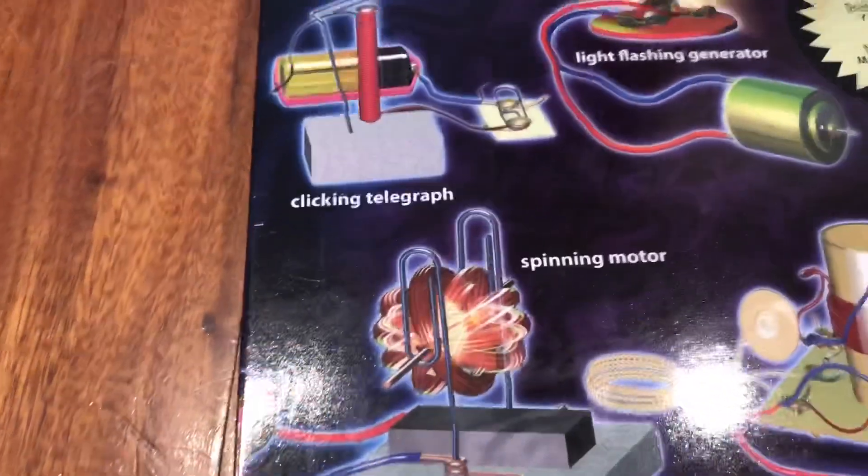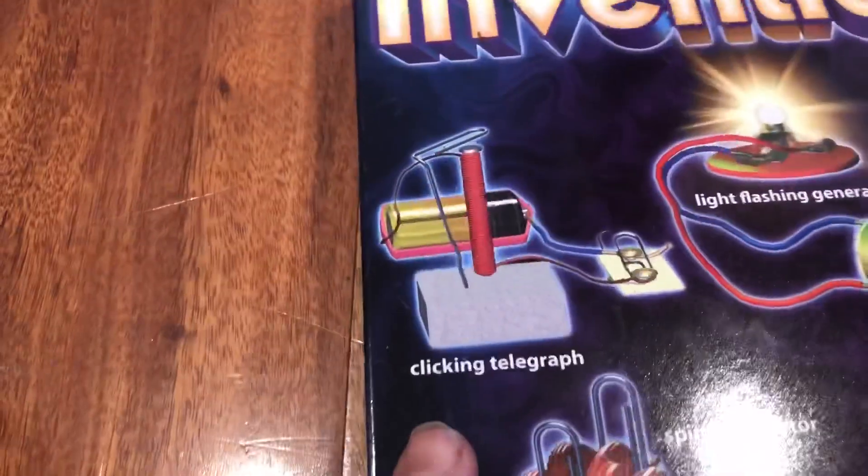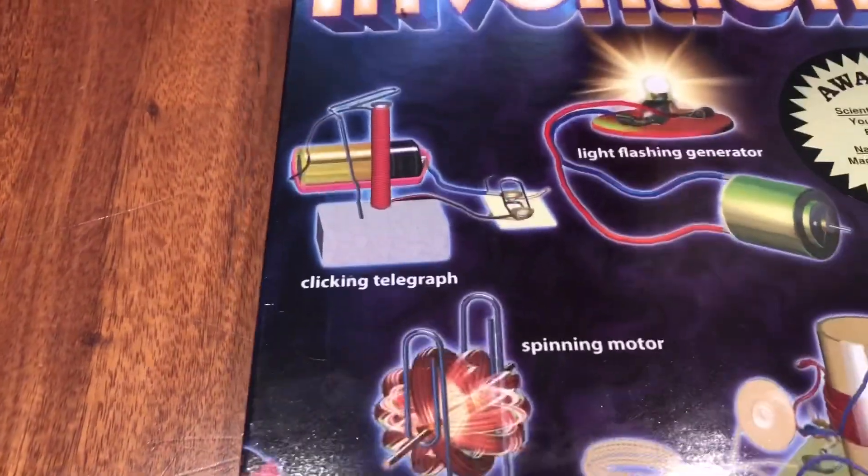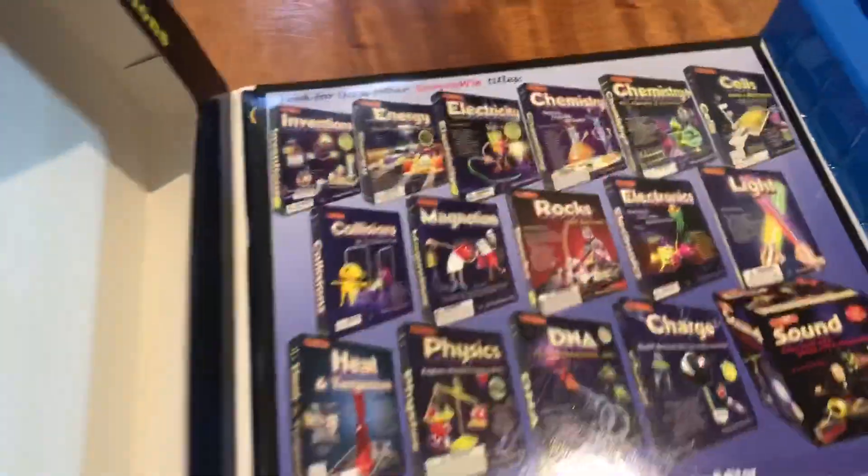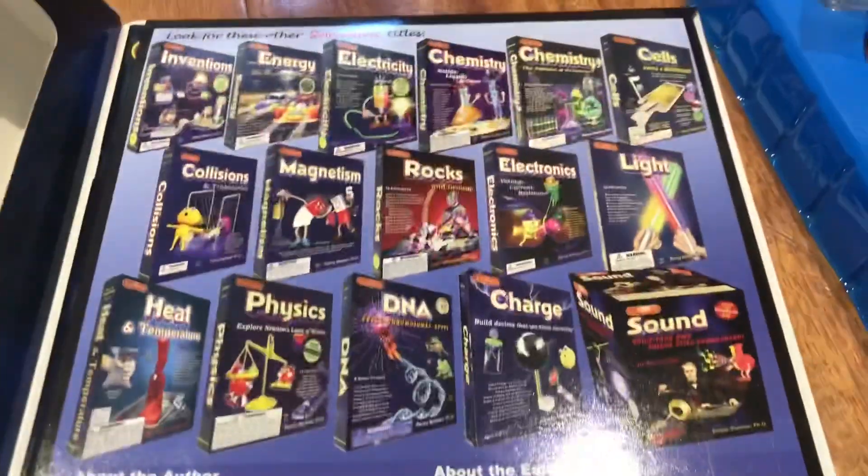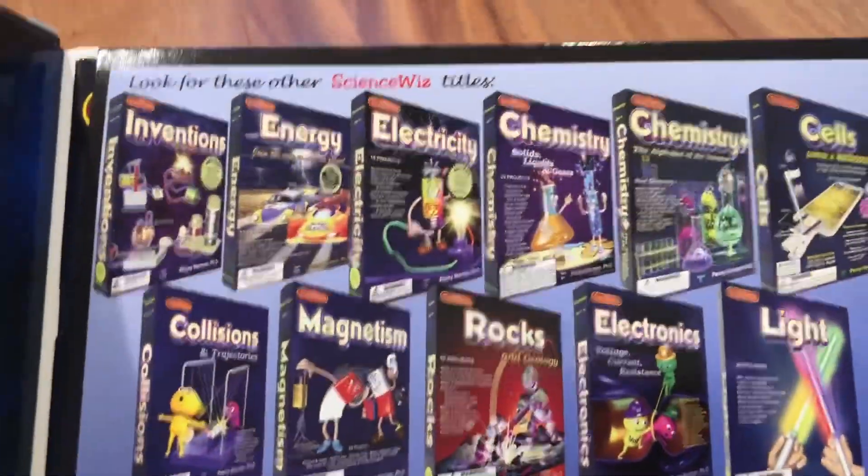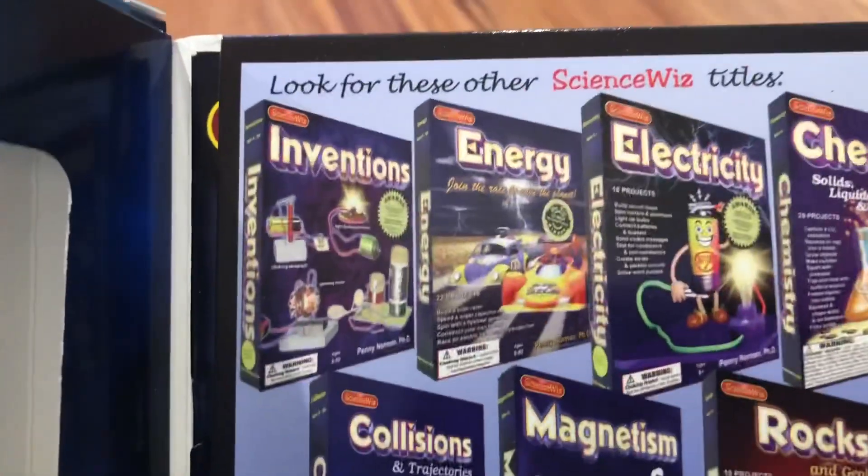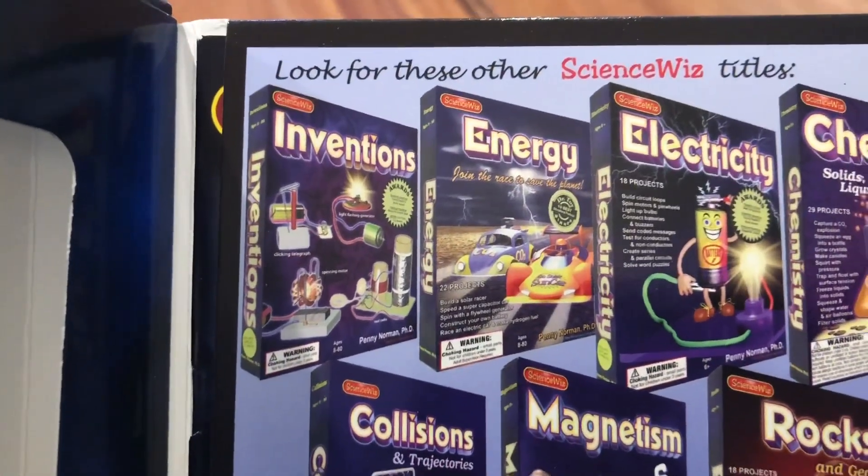And again, there's that spinning motor. And here's a clicking telegraph. Very cool. They show you inside this kit that it comes with a whole bunch of other ideas that you might want to do. This top one, top left is Inventions. That's this guy right here.